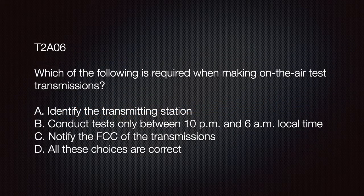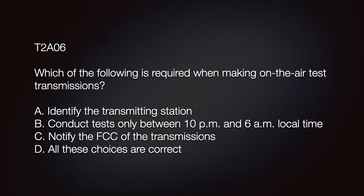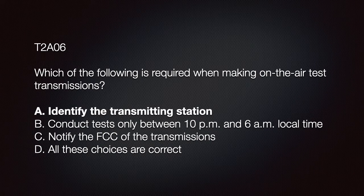The exam question is: Which of the following is required when making an on-air test transmission? A: Identify the transmitting station; B: Conduct tests only between 10 p.m. and 6 a.m. local time; C: Notify the FCC of the transmissions; or D: All these choices are correct. The correct answer is A, identify the transmitting station.